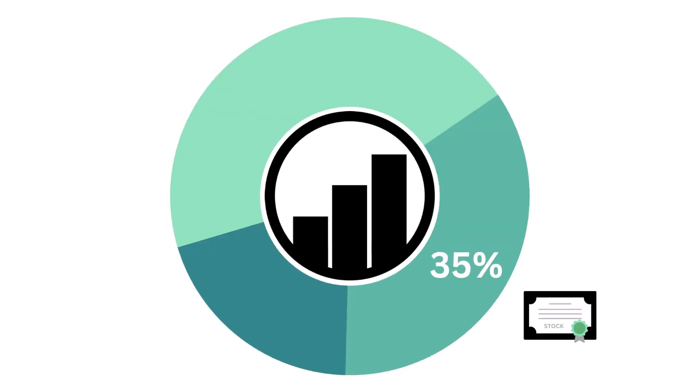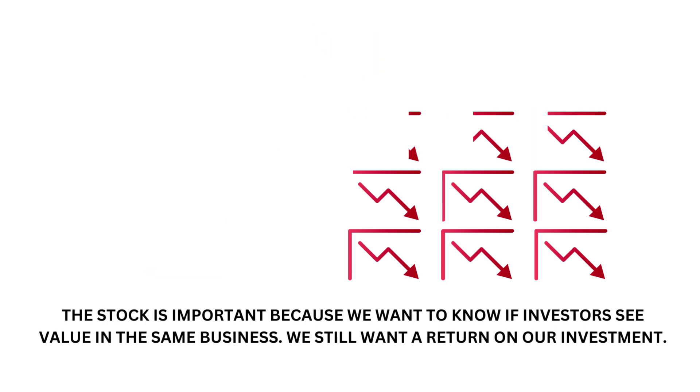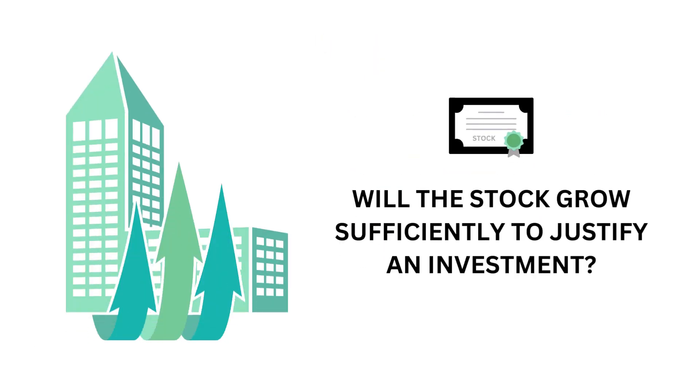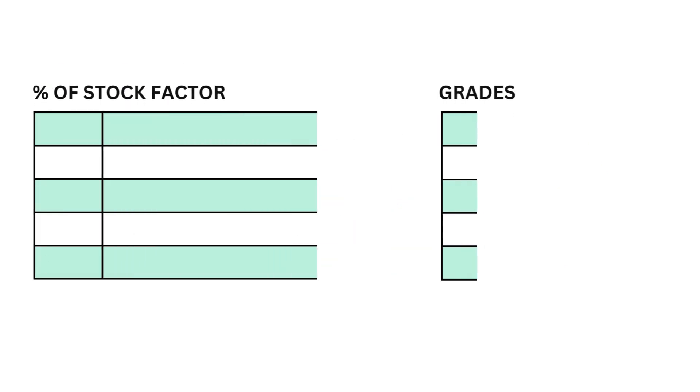Now you know whether this is a good business to own or not, so let's then look at the stock. The stock factor accounts for 35 percent of the analysis. The stock is important because we want to know if investors see value in the same business. We still want a return on our investment. The question we want answered is: will the stock grow sufficiently to justify an investment? The stock is made up of five metrics from performance, dividends, to Wall Street analysis.